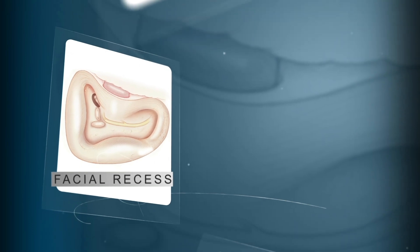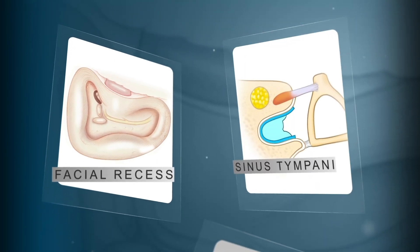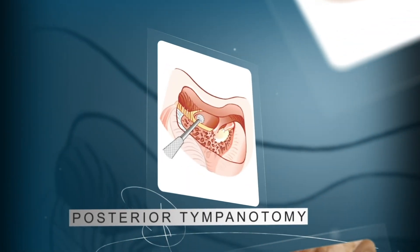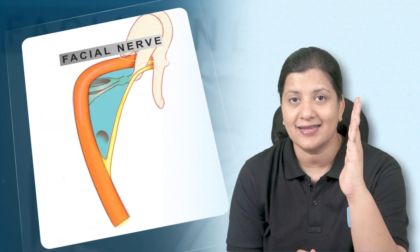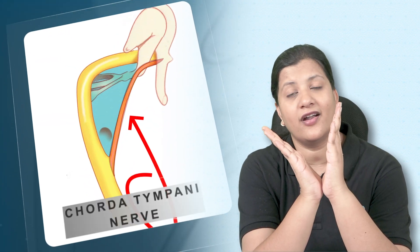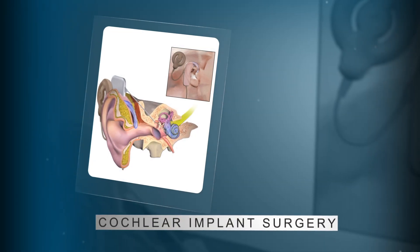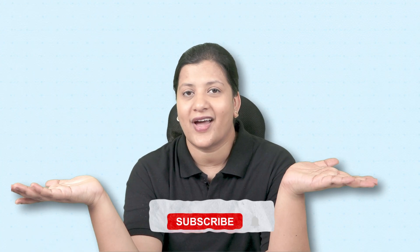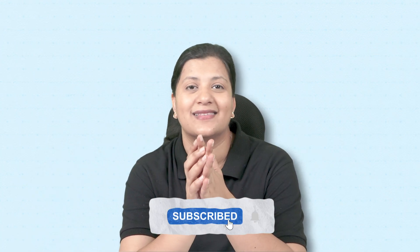We have a suprapyramidal recess called the facial recess, and an infrapyramidal recess called the sinus tympani. When we use this facial recess as a route to reach the middle ear, we call that procedure posterior tympanotomy — reaching the tympanum from the posterior route. It is bounded by the vertical segment of the facial nerve, chorda tympani nerve, and fossa incudis above, and it is commonly used for cochlear implant surgery. So you got so many facts right in this one simple question.